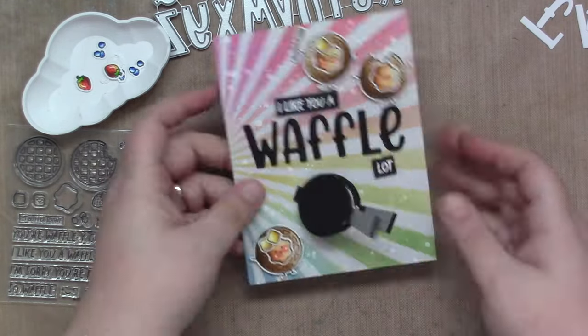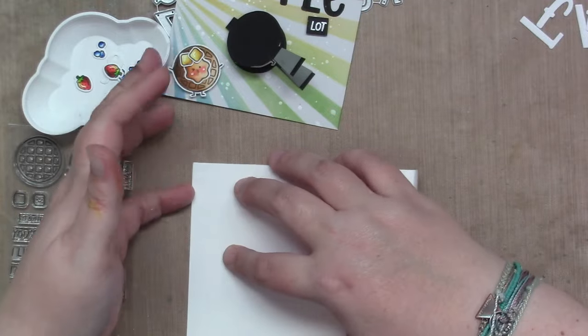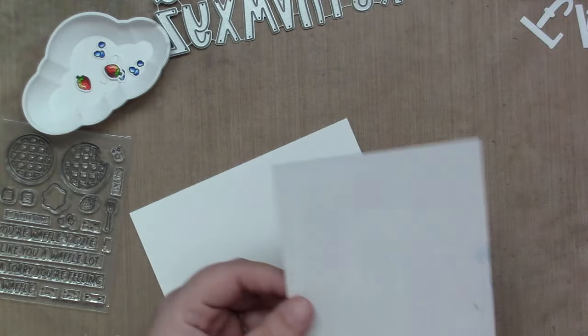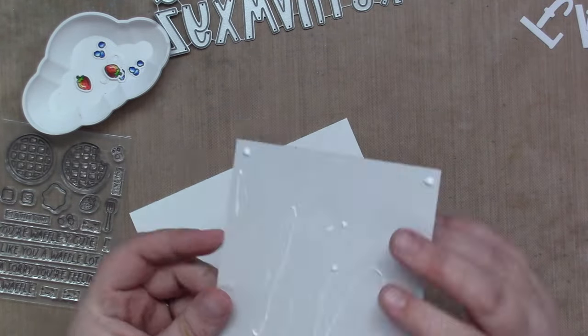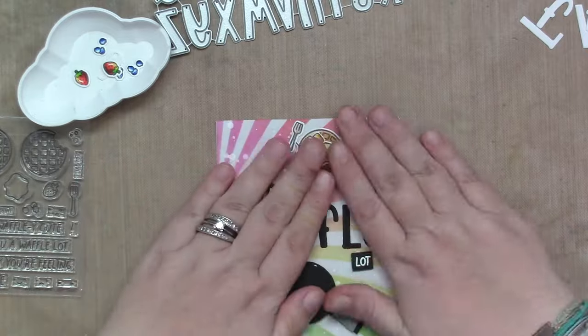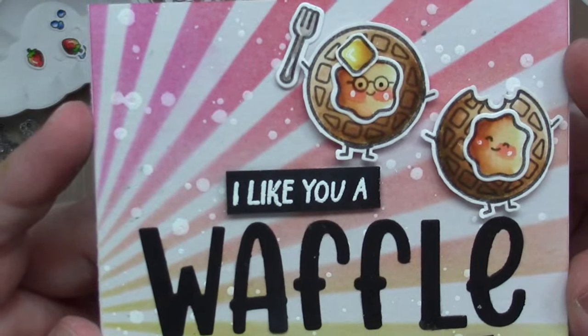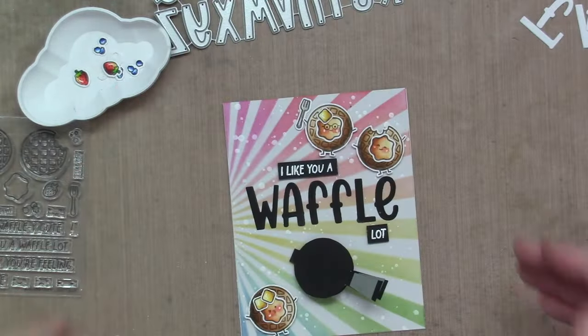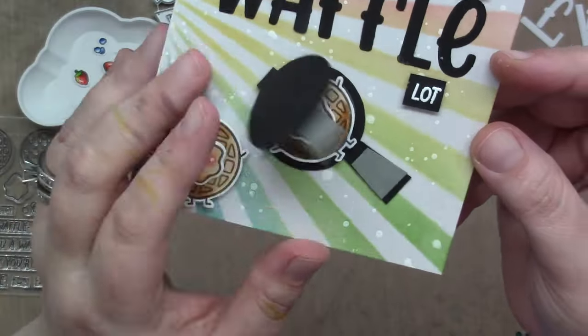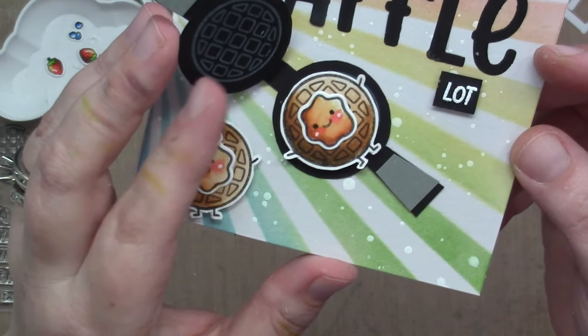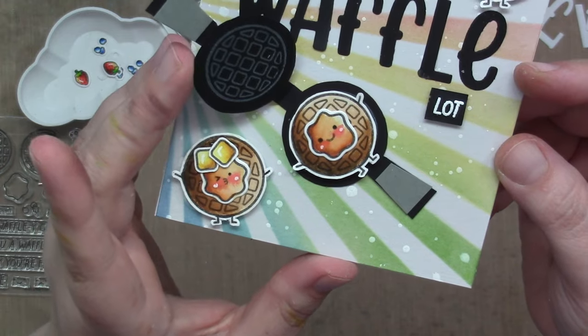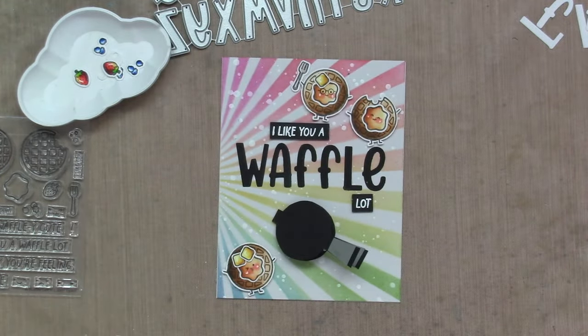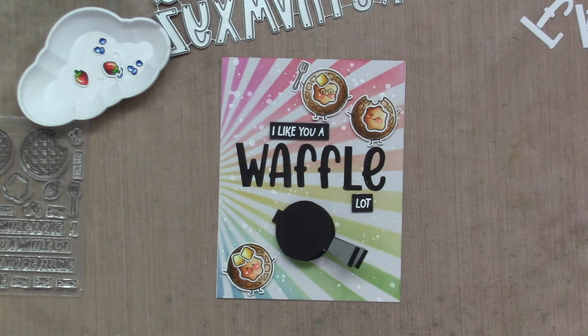I added the last waffle on the bottom and I am just going to fold my card base over and then add all the adhesive and glue to my card front and attach that to the card base, and then it's complete. I love this cute card, those waffles are just so cute. I love how much you can add personality to them, and this cute little waffle iron was so easy and fun to make. Be sure to check it out on the Lawn Fawn blog and thank you so much for watching. Have a great day, bye.